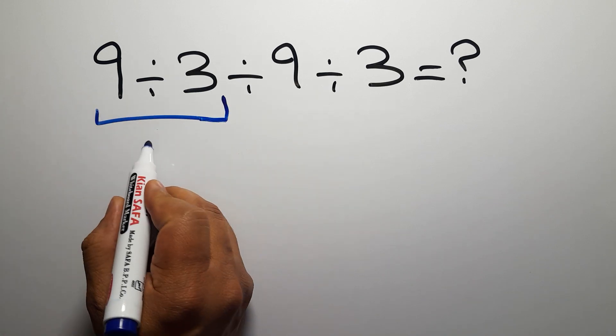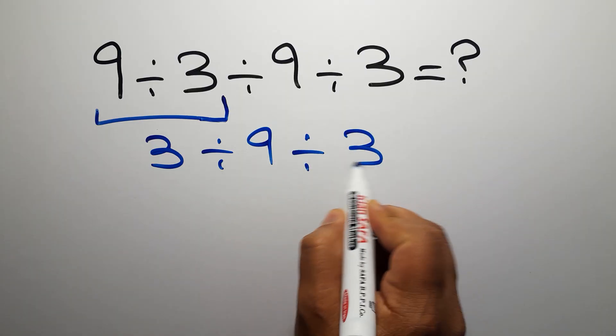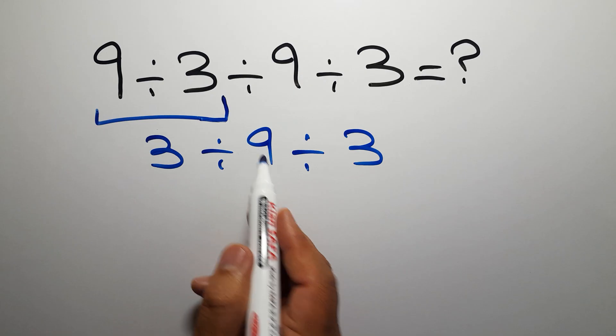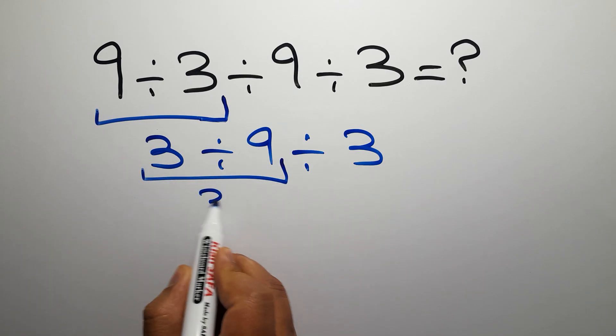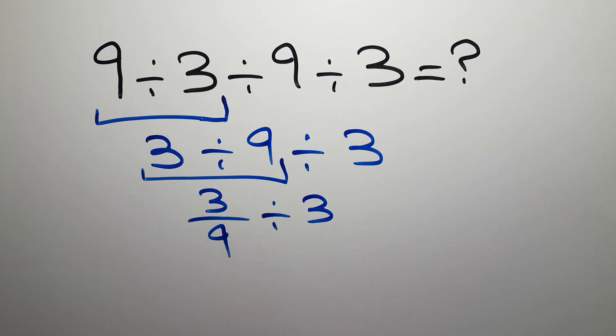So 3 divided by 9 and divided by 3. Now we have to do this division: 3 divided by 9. We can write 3 over 9, then divided by 3. Okay, now according to the KCF rule.